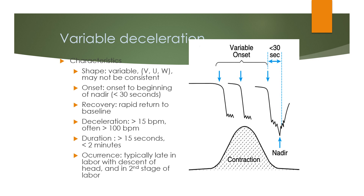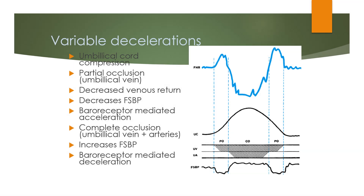Variable deceleration has a characteristic V, U, or W shape. Onset and recovery are rapid, with a return to baseline and deceleration of more than 15 beats per minute, often more than 100 beats per minute. Duration is more than 15 seconds to less than 2 minutes. It typically occurs late in labor with descent of the head in the second stage. The mechanism involves umbilical cord compression: partial occlusion causes decreased venous return and decreased fetal systolic blood pressure, triggering baroreceptor-mediated acceleration; complete occlusion of umbilical arteries increases fetal SBP, triggering baroreceptor-mediated deceleration.